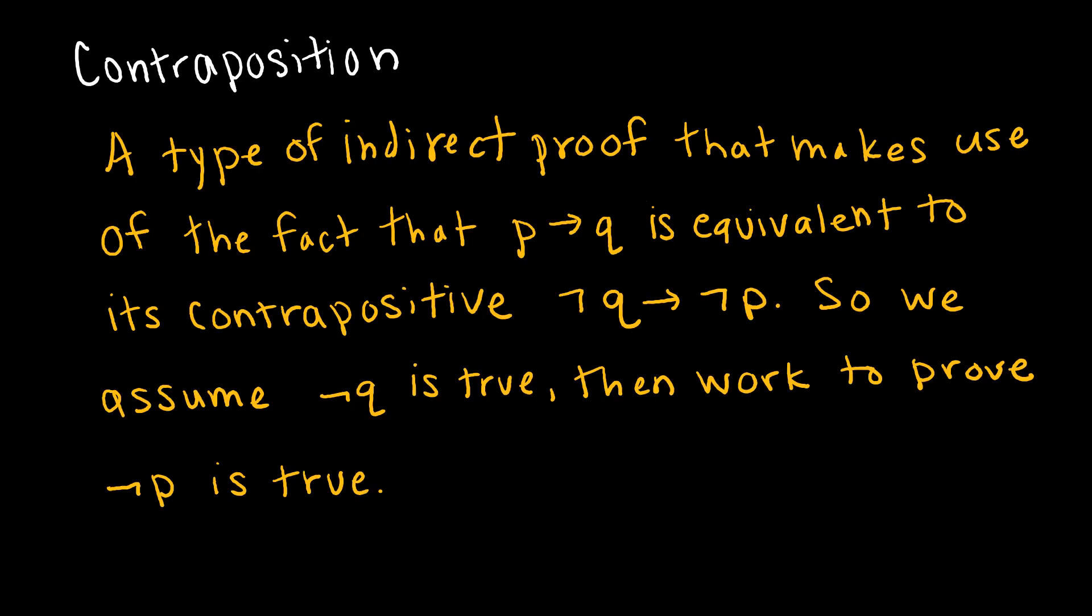Contraposition is a type of indirect proof that makes use of the fact that if P then Q is equivalent to its contrapositive, or has the same truth value as its contrapositive.